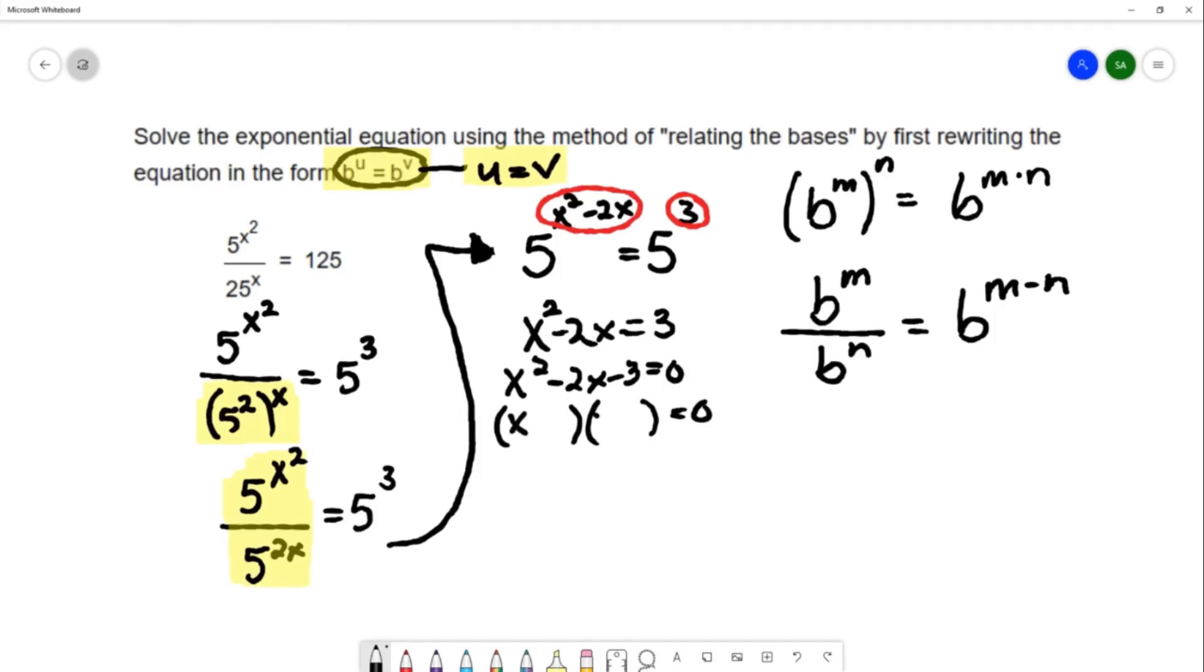So x times x is x squared. 3 times 1 is 3, and I need to create a middle term of negative 2. I would do that by having a negative 3 and a positive 1.